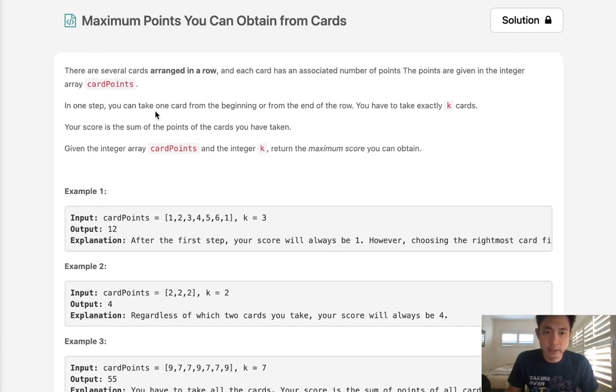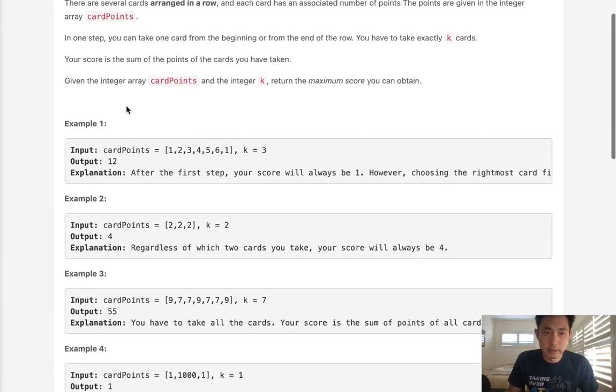In one step, you can take one card from the beginning or from the end of the row. You have to take exactly k cards. Your score is the sum of the points of the cards you have taken. Given the integer array card points and integer k, return the maximum score you can obtain.